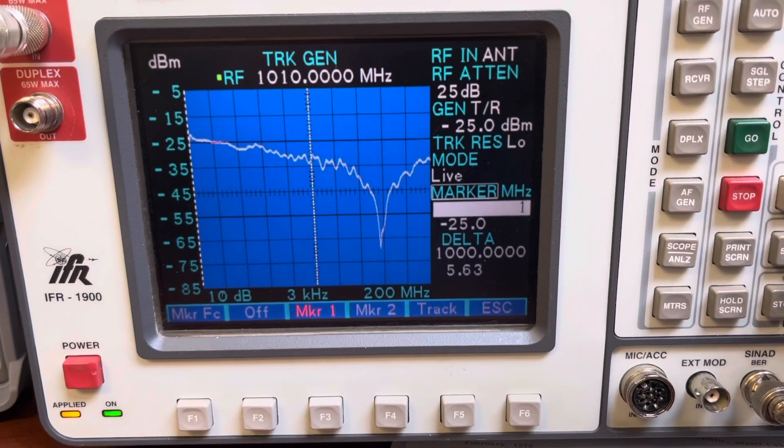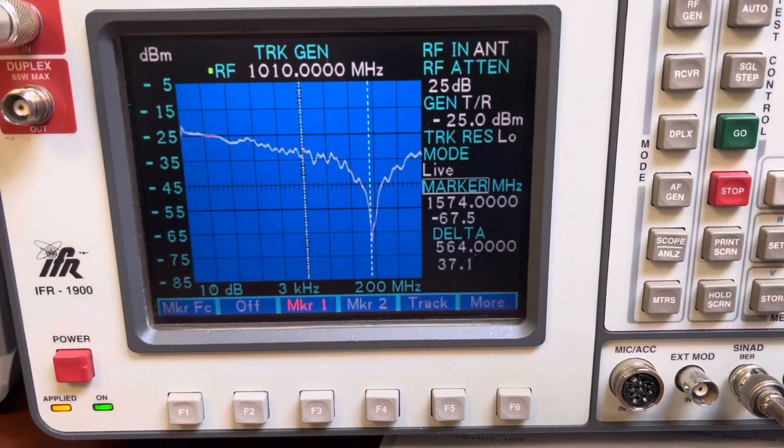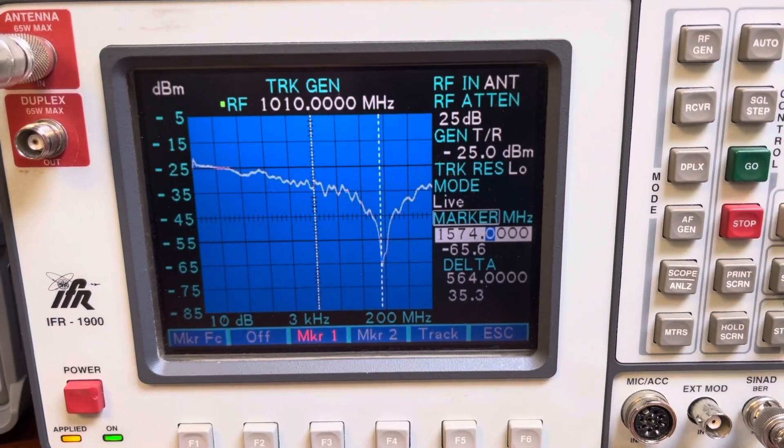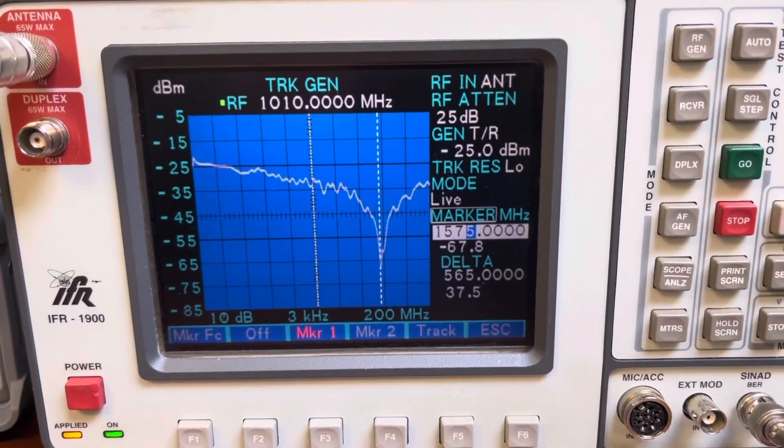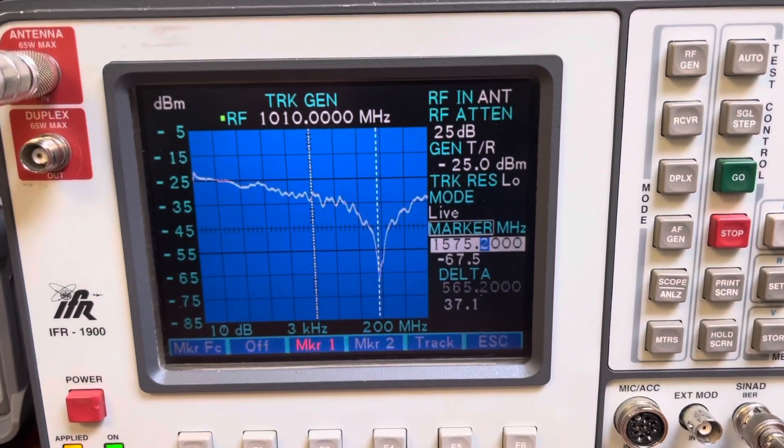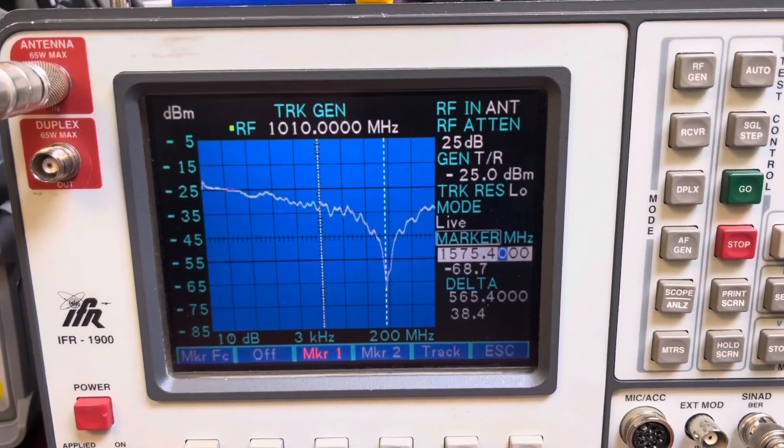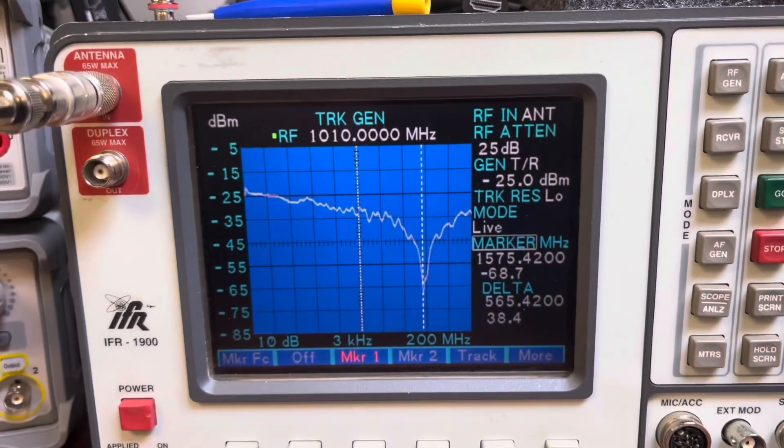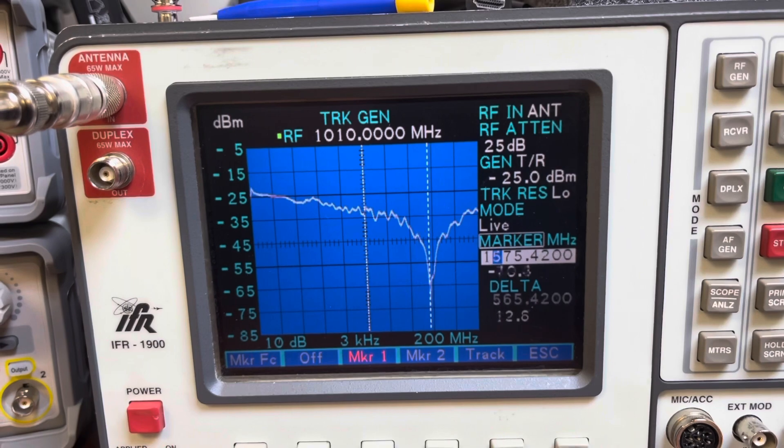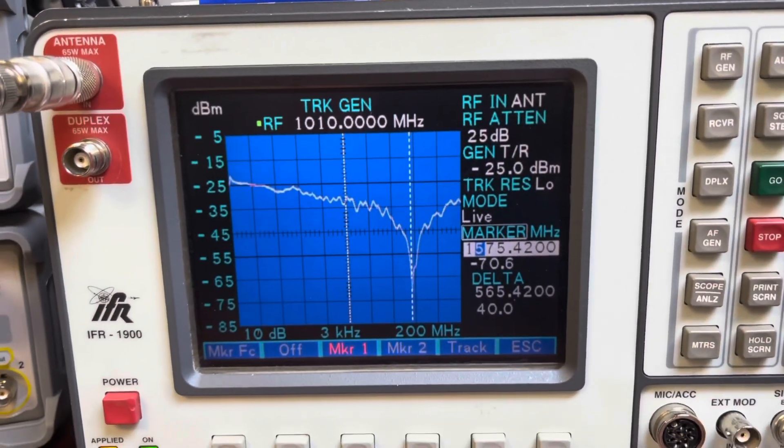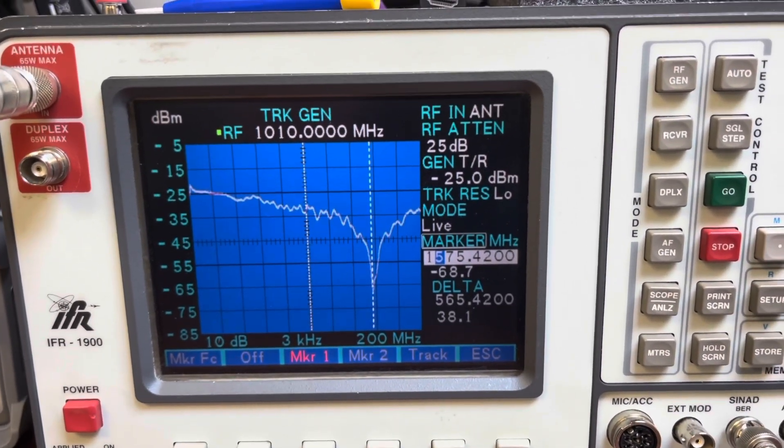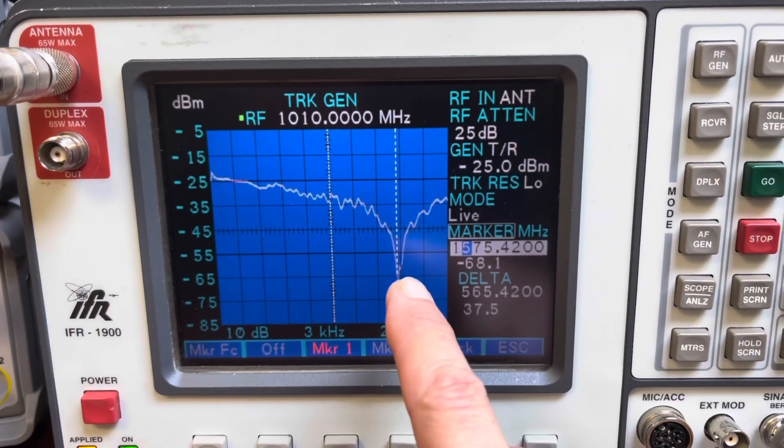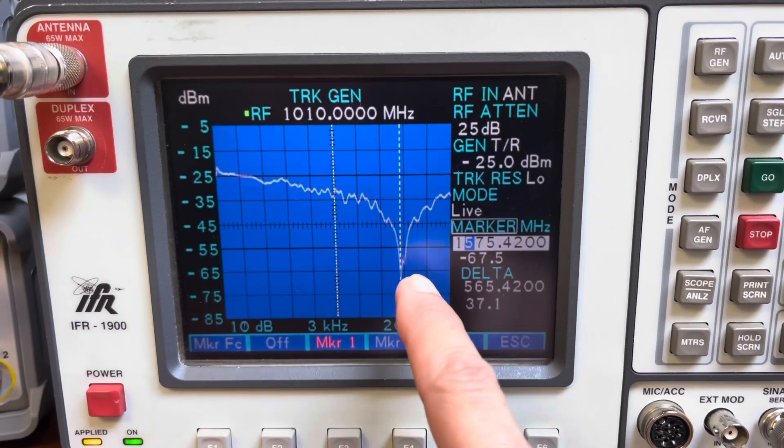We want to be at 1.57542 gigahertz. There's the exact frequency right there that we want to be on. So this notch filter is designed to attenuate that right there, 1.57542 gigahertz. That will help us if we've got a COM radio that's got a spurious emission out there around that frequency and that'll attenuate that.